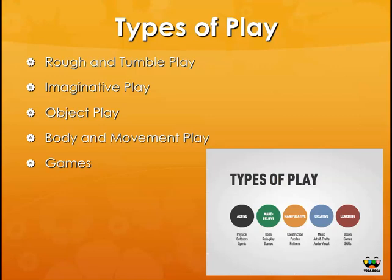Object play involves playing with puzzles, blocks, or manipulatives to make something. It has a sort of end goal — completing the puzzle or building a block structure — and involves the child manipulating different objects with a particular goal in mind. Body and movement play, different from rough and tumble play, is about using your body in creative ways: dancing, doing arts and crafts, or playing with audio-visual games.